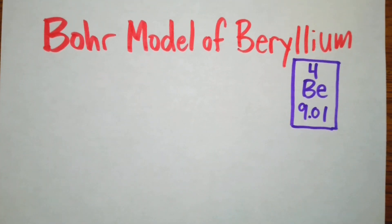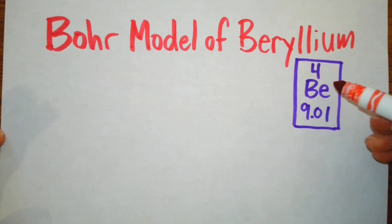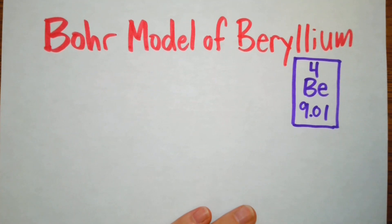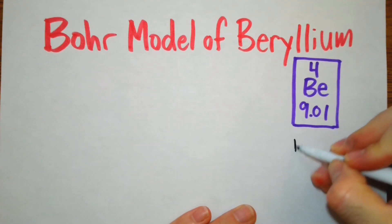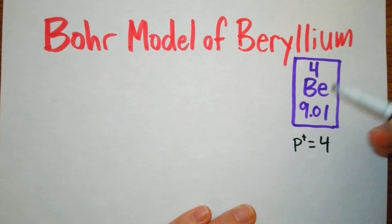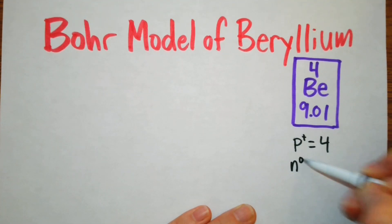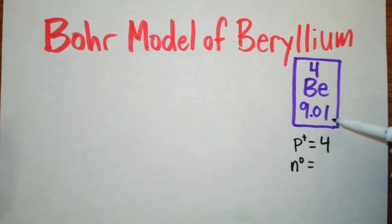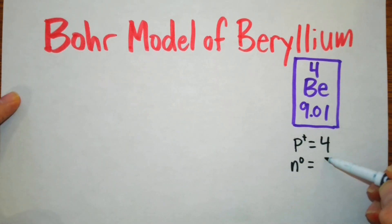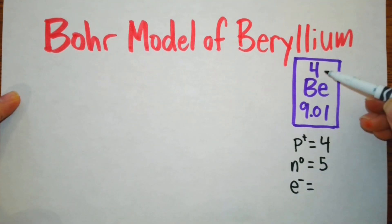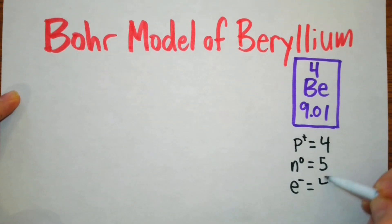You do need a periodic table for this, and we have that information contained in the periodic table right here. We have to determine the number of protons, electrons, and neutrons. Our protons are equal to our atomic number, so we have four. Our neutrons are calculated by taking the atomic mass, rounding it, and then subtracting the atomic number — that rounds to nine minus four, giving us five neutrons. And the electrons are also equal to the atomic number, which is four.